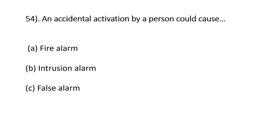Question fifty-four: an accidental activation of an alarm by a person could cause — A) fire alarm, B) intrusion alarm, C) false alarm. If anybody accidentally activates the alarm, it is called a false alarm. The correct answer is C.